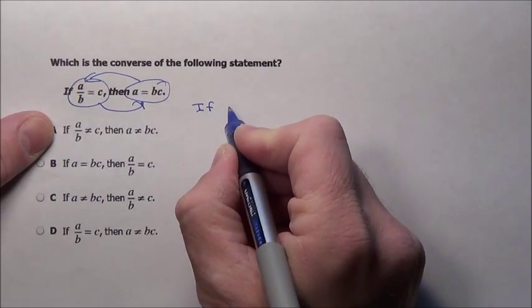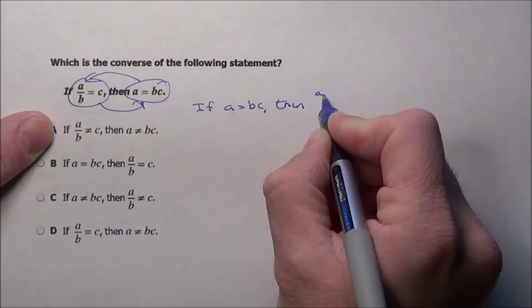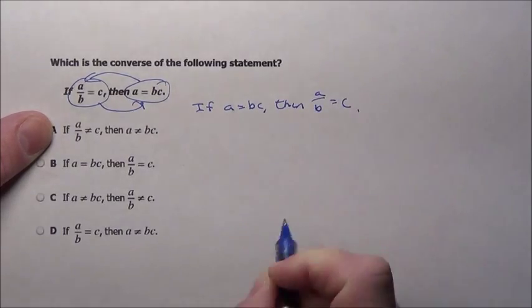So we're looking for if A equals BC, then A divided by B is equal to C. That's what we're looking for.